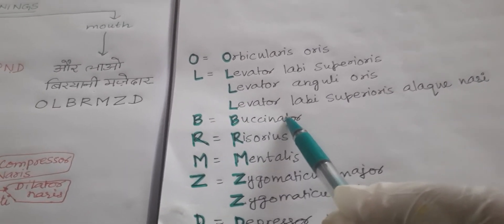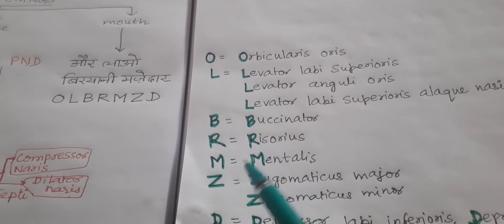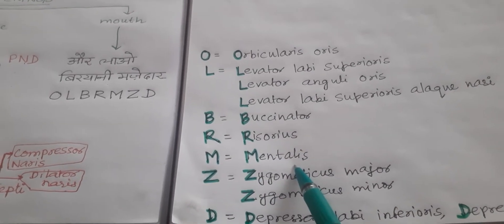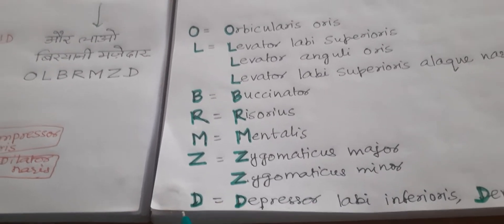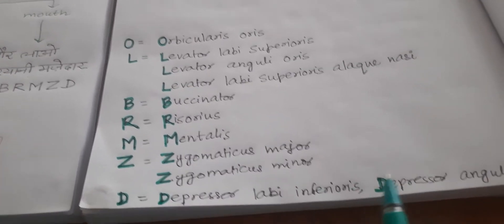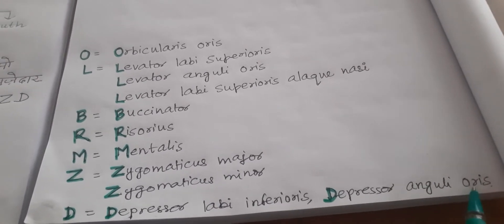B for buccinator, R for risorius, M for mentalis, Z for zygomaticus major and minor, D for depressor labii inferioris and depressor anguli oris.